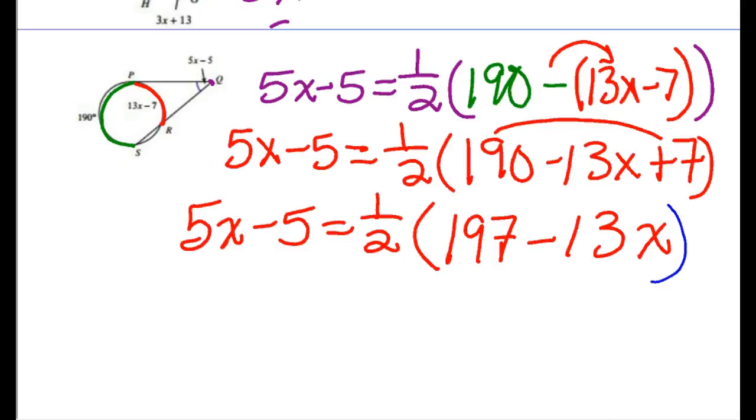You do what your brain likes better. Do you want to take half of these? You've always been taught distribute, hippity hoppity distributive property. But I would counter that it's easier to get rid of this by doubling it. If I double the left hand side I'm good to go. So I'll have 10x minus 10 is equal to, the 2's would cancel, and I get 197 minus 13x.